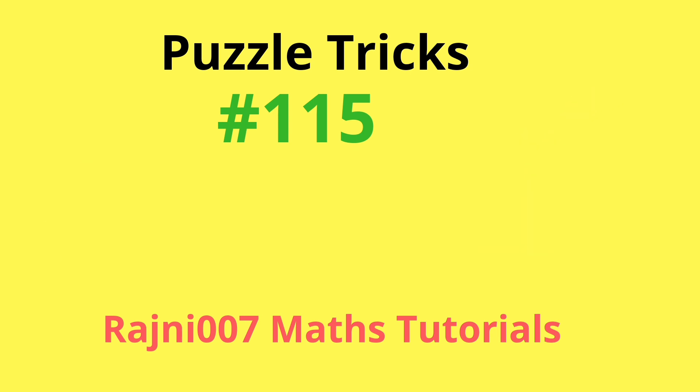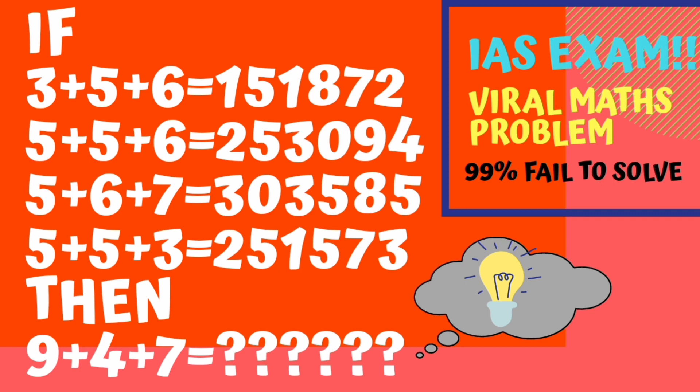Today's puzzle is related to reasoning. If 3+5+6=151872, 5+5+6=253094, 5+6+7=303585, 5+5+3=251573, what will be the value of 9+4+7? It's already come in IAS Exam viral math problem and 99% fail to solve.